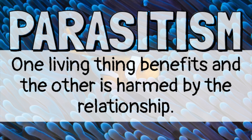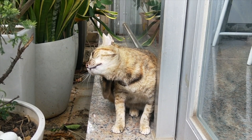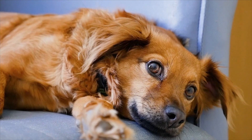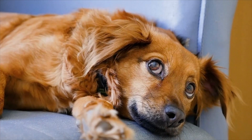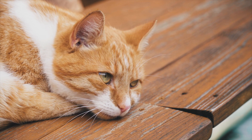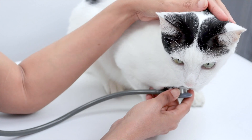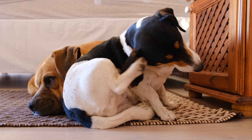Parasitism is the third type of symbiotic relationship. In this relationship, one living thing benefits and the other is harmed. The fleas or ticks you may find on your pet cat or dog are an example of a parasitic relationship. Parasitic bugs like fleas and ticks drink the blood of animals like cats and dogs and get a warm, cozy place to live. The parasites benefit from this relationship. However, cats and dogs are harmed — fleas and ticks carry diseases that can make your pet sick, and they also cause itching and discomfort to their hosts.